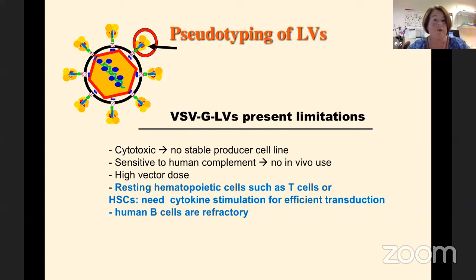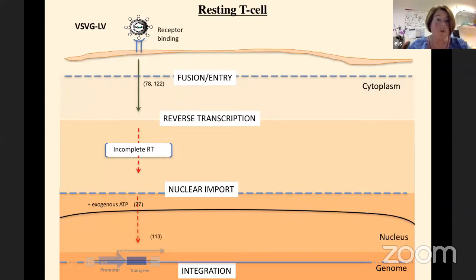Another drawback is that many target cells for gene therapy — like T cells, hematopoietic stem cells, or B cells — we would like to keep in the resting state so that their phenotype does not change, and get them efficiently transduced. But VSV-G is not really working for that. In a resting T cell, all the steps are slowed down: the fusion and entry of the vector, the reverse transcription of the RNA into DNA, the nuclear import, and finally the integration.